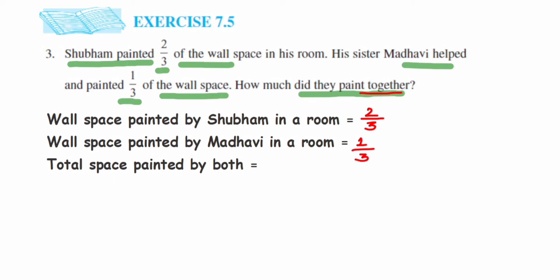So two upon three plus one upon three. Now if you see, denominators are same here - we have a three here. This means it's a like fraction, and with like fractions you have to keep the denominator same and simply add the numerators.